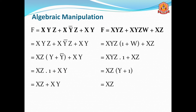Take xz outside, giving xz(y + y') + xy. According to the complementary law, y + y' = 1, so it becomes xz·1 + xy. Since any variable dotted with 1 equals itself, we get xz + xy. The three-term expression is reduced to a two-term expression.